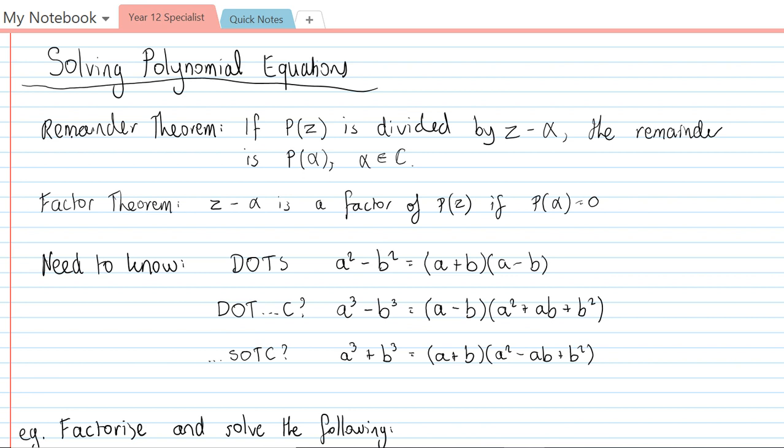A couple of other things we need to know in order to be able to do these questions. We need to know the difference of two squares factorization: a² - b² = (a+b)(a-b). We also have the difference of two cubes: a³ - b³ = (a-b)(a² + ab + b²). And also the sum of two cubes: a³ + b³ = (a+b)(a² - ab + b²).